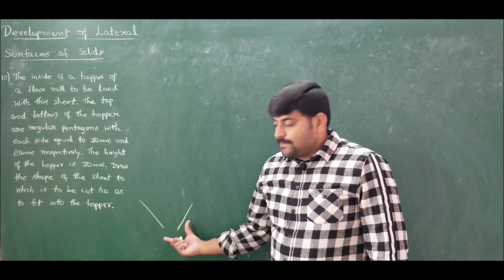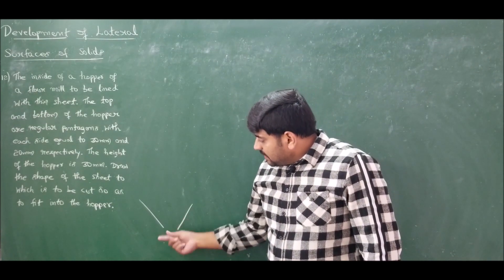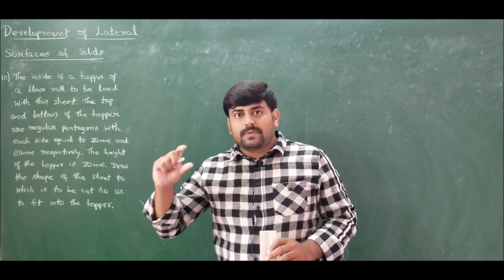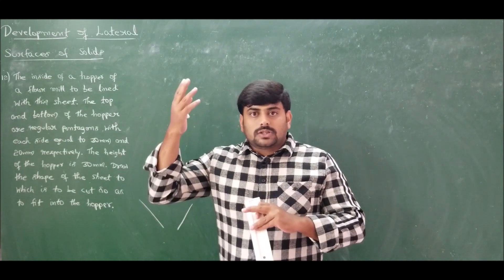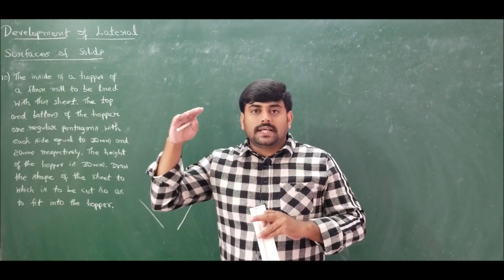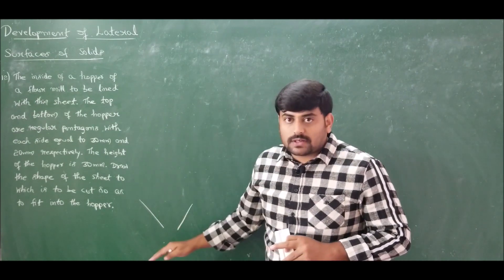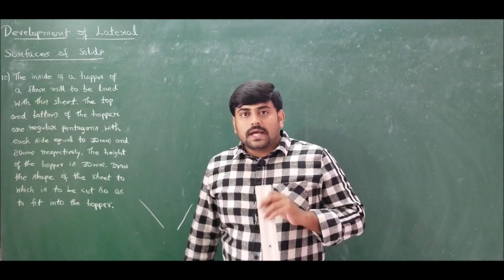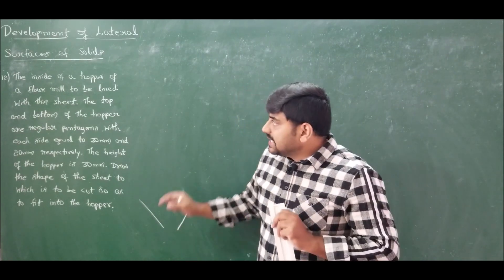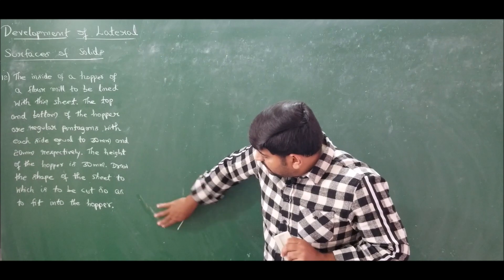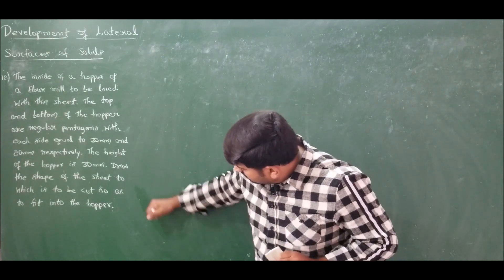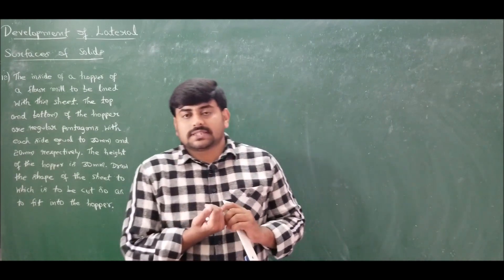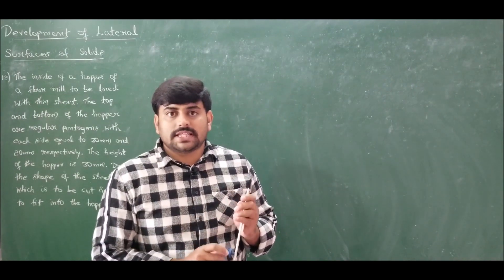The hopper is an inverted frustum of a pyramid — if you take a frustum and invert it so that the top face has a larger side length than the bottom face, you get the hopper. A problem of similar type was addressed in problem number 11. Recalling that solution, let us address this hopper problem as problem number 12. For solids resting on HP, first we draw the top view.